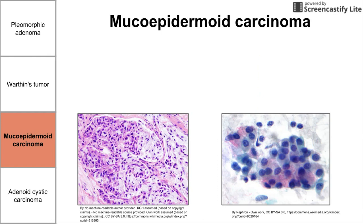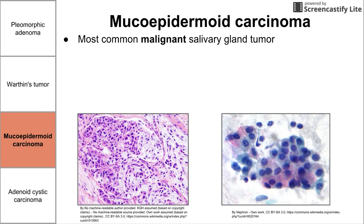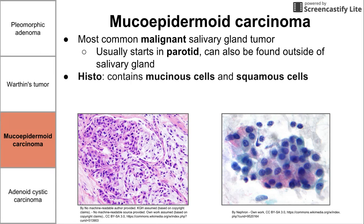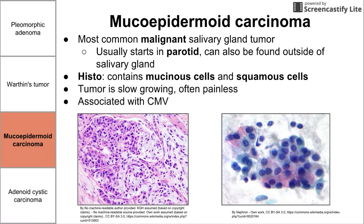Next is mucoepidermoid carcinoma. This is the most common malignant salivary gland tumor — so this is cancer. It usually starts in the parotid and can also be found outside of the salivary gland. On histology, you see mucinous cells and squamous cells, kind of like the name implies: muco for mucinous cells, epidermoid for squamous cells. The tumor is slow-growing and often painless, and it has been suggested to be associated with CMV, cytomegalovirus.